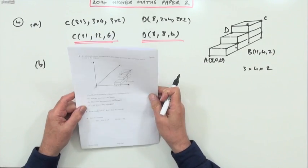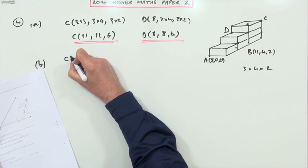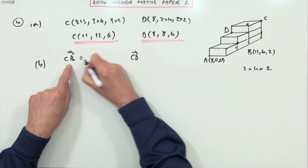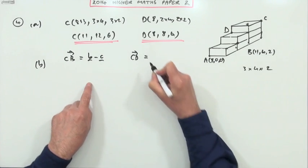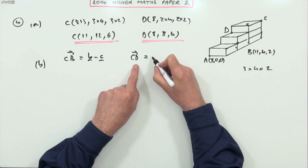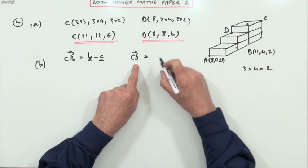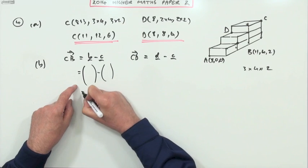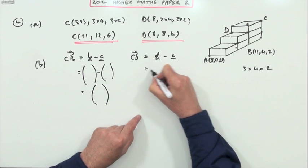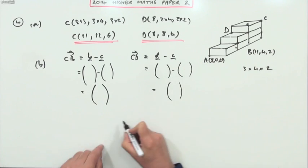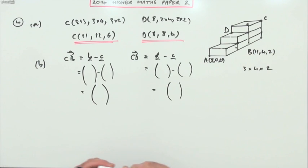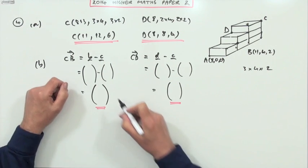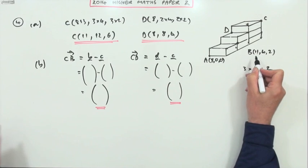Right, part B: determine the components CB and CD. Well CB will be B minus C, just subtracting the position vectors of either end to see how you get from one place to another. D minus C. Let me leave room for the rest of this.